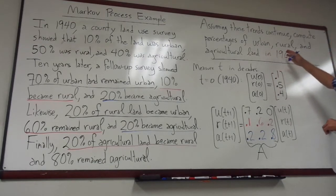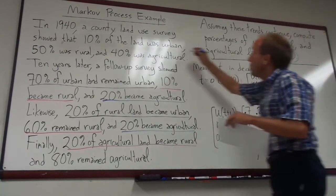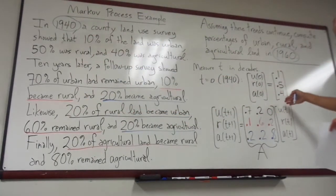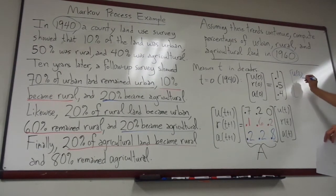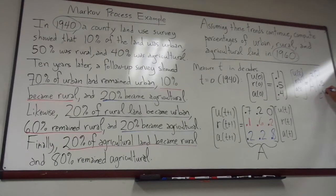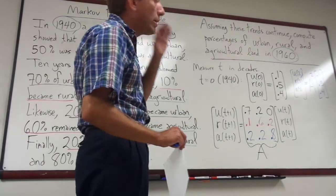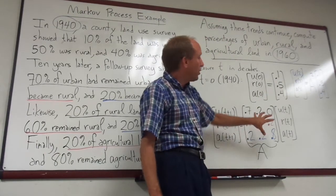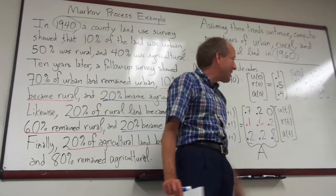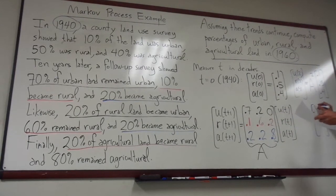The question asks for the percentage of urban, rural, and agricultural land in 1960 — exactly two decades after the initial configuration. So we're solving for U(2), R(2), A(2). This is just A² times the initial configuration vector [0.1, 0.5, 0.4]. You don't need to diagonalize the matrix here since you're only squaring it. The answer works out to approximately 0.197, 0.339, and 0.464.